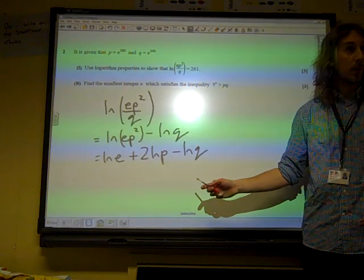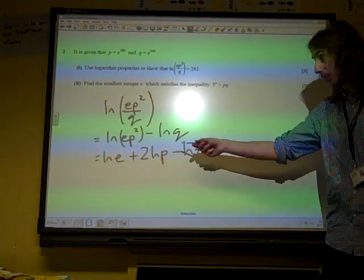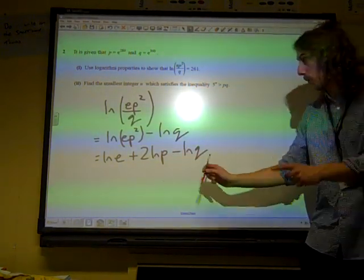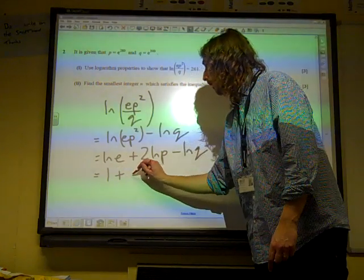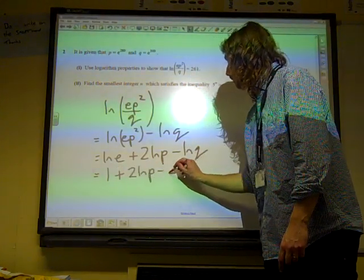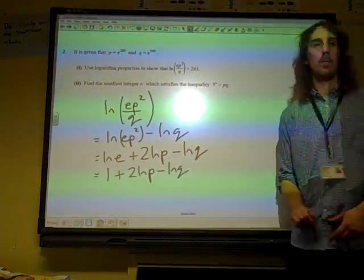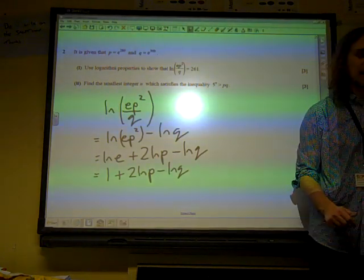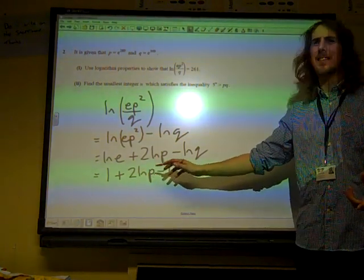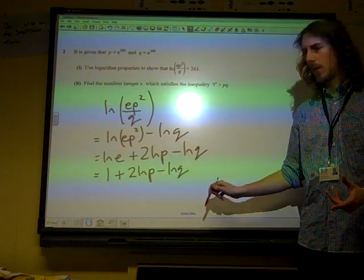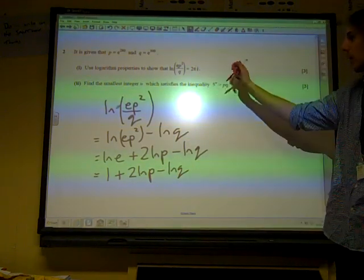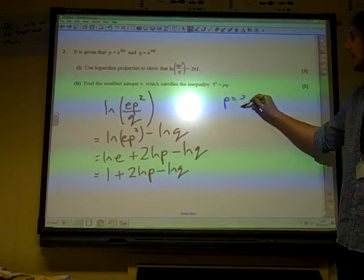And I'm going to pause at that point because that's quite a good bit to have got to. Maybe I'll write one more line, maybe I'll write that that is 1 plus 2 ln P minus ln Q. And now I need to think what is ln P and what is ln Q. So I'll think back to what we started with.